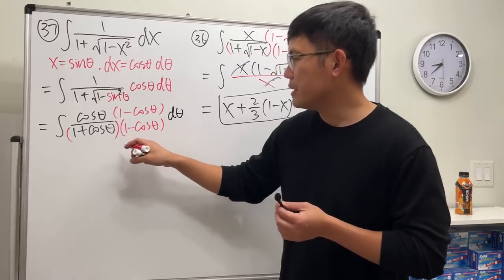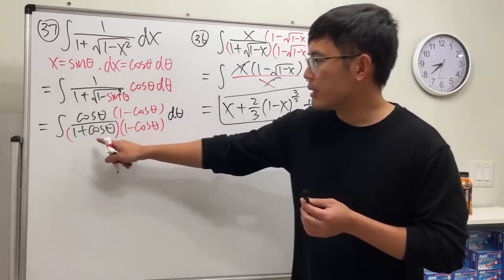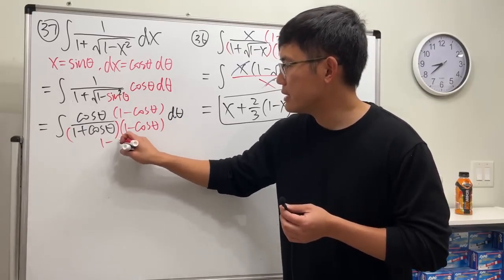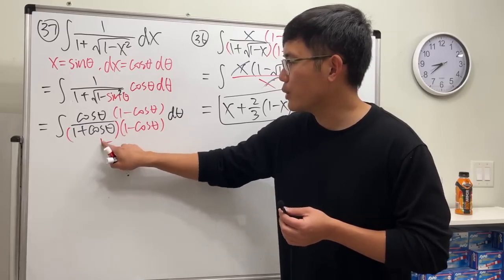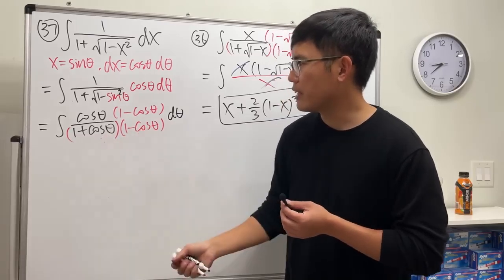So on the bottom becomes... on the bottom it becomes one minus cosine square, which is just sine square theta. Yeah, on the bottom, sine square theta.